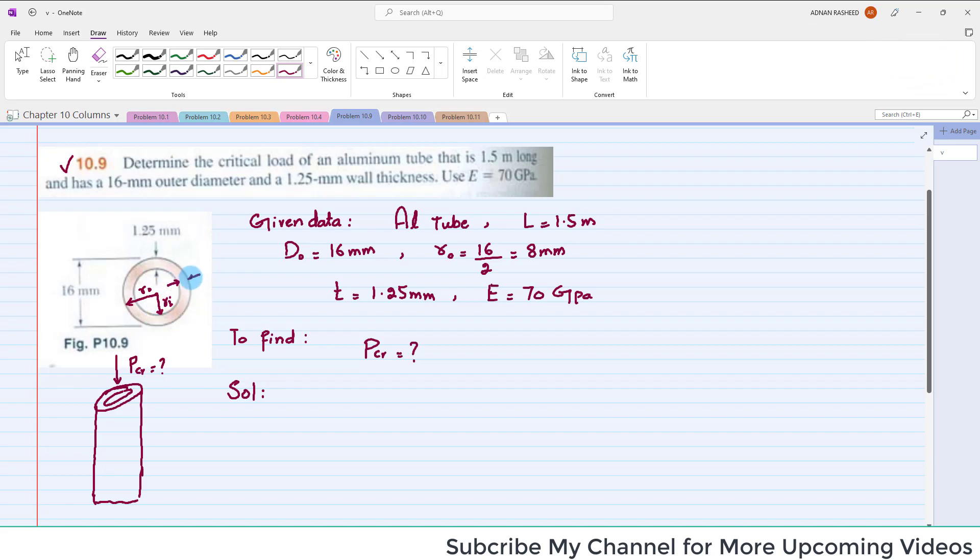This is the thickness of the tube. From this we can conclude that this thickness is equal to R naught minus R i, so we can find the inner radius R i.